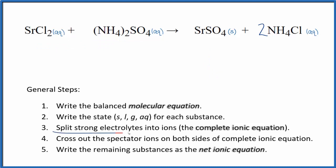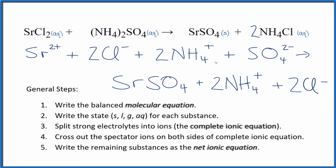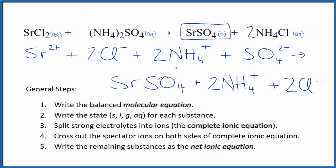So once we have our states, we can split the strong electrolytes into ions for the complete ionic equation. And that looks like this. So I split up everything except the solid. We don't split solids apart in net ionic equations. So everything else we split into its ions.